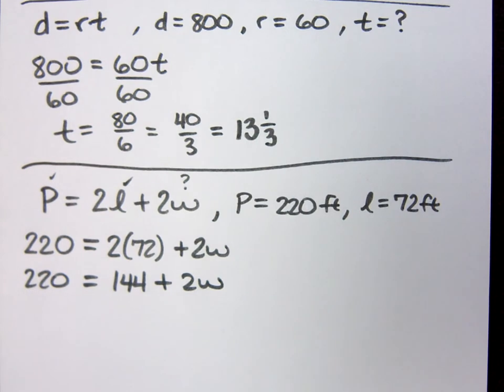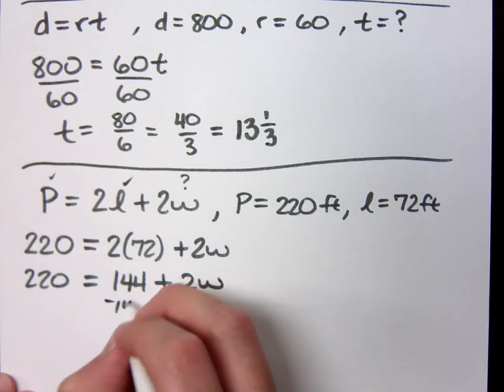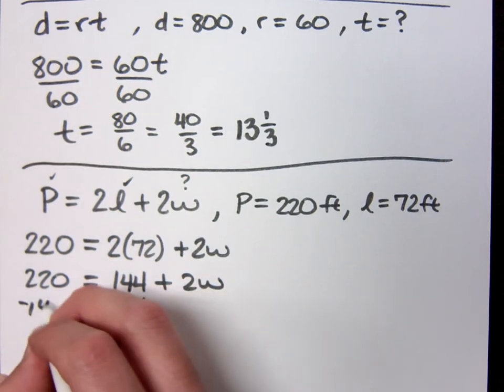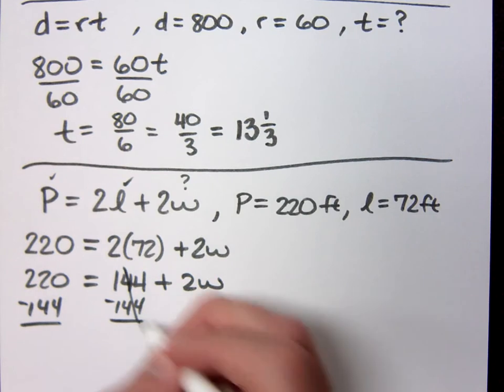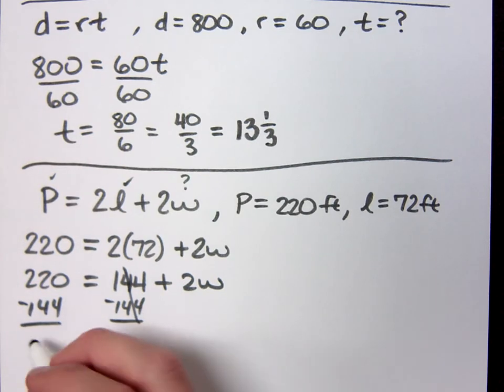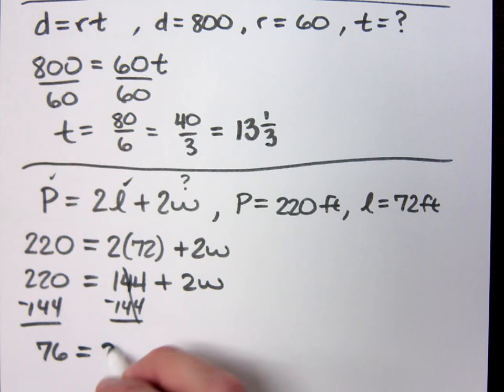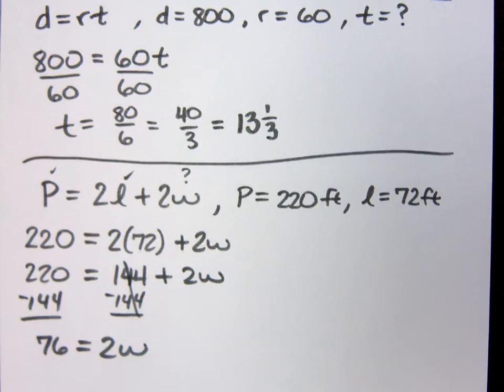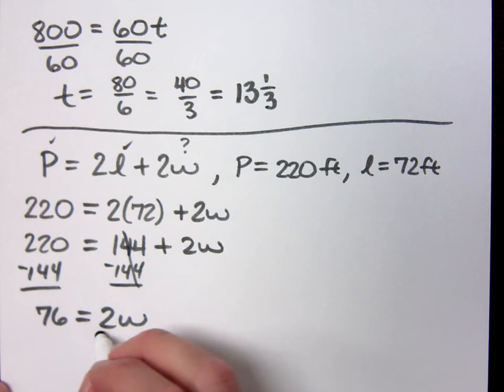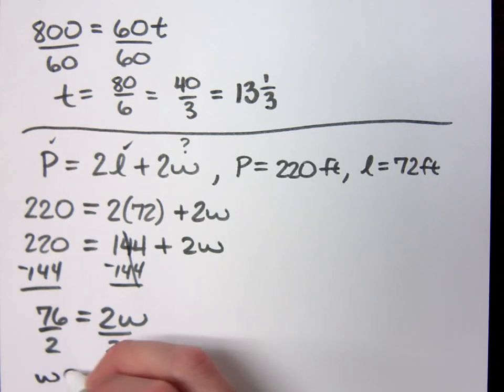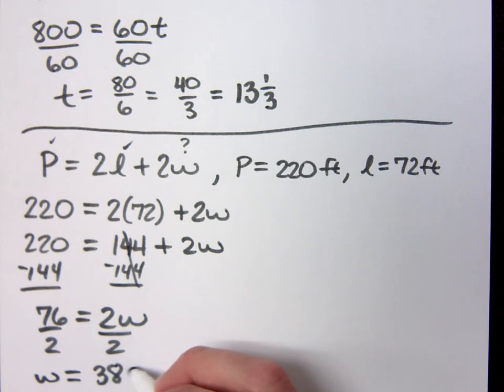Subtract the 144. So what's 220 minus 144? 76 equals 2W. I don't want 2Ws, I just want 1, right? So what should the width be when we're trying to mark this out? Should be 38 feet, right?